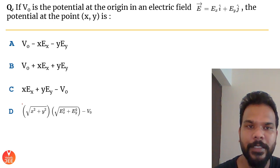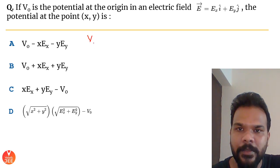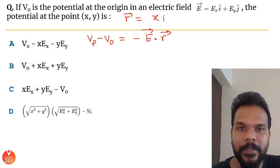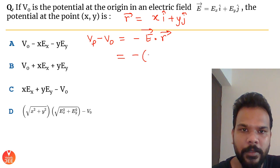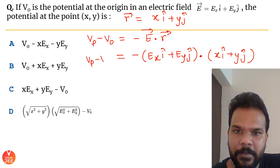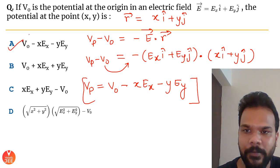Question 11: V₀ is the potential at the origin in electric field E = Ex î + Ey ĵ. Find the potential at point (x, y). Using VP − V₀ = −E·r, with r = xî + yĵ: VP = V₀ − xEx − yEy. This is option A.